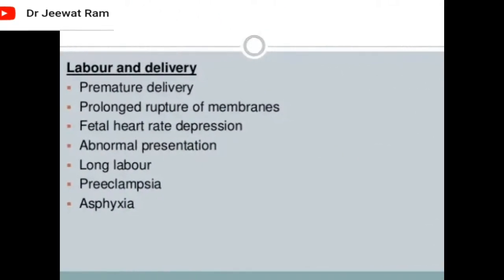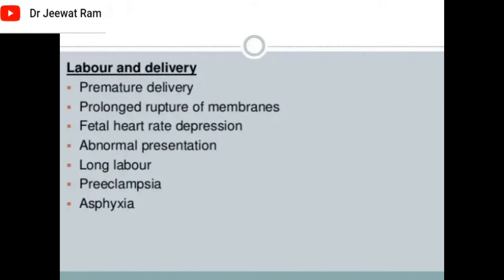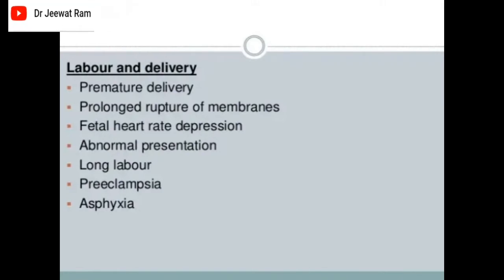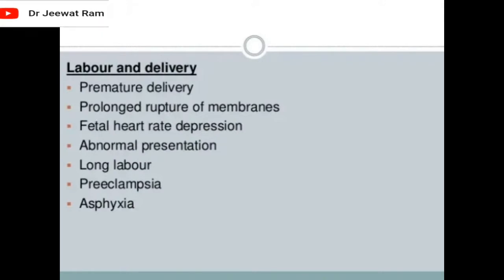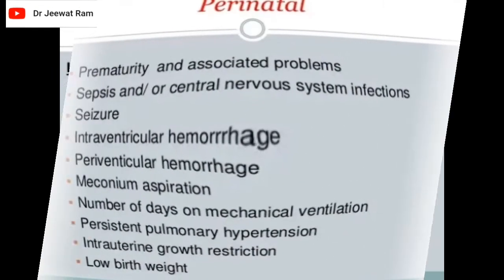Labor and delivery causes include premature delivery, prolonged rupture of membranes, fetal heart rate depression, abnormal presentation, long labor, preeclampsia, and asphyxia.